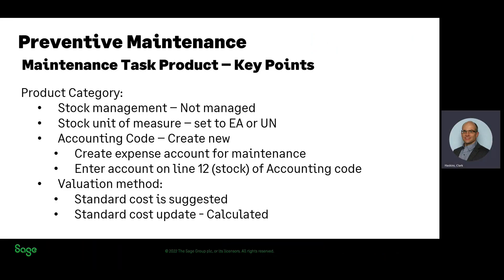In summary, the key points for setup of a maintenance task product are: stock management is set to not stock managed; set the stock unit as applicable; create a new accounting code for the preventive maintenance; add an expense account for maintenance tasks if one does not exist and add that expense account on line 12 stock of the accounting code; for the valuation method, standard cost is suggested; and the standard cost update should be set to calculated.